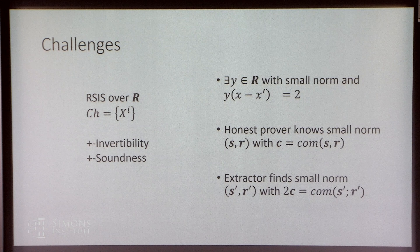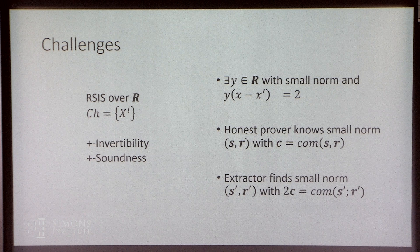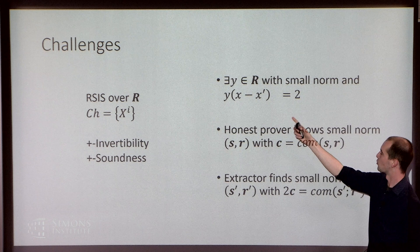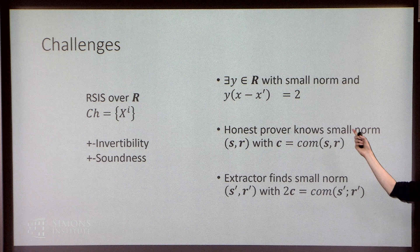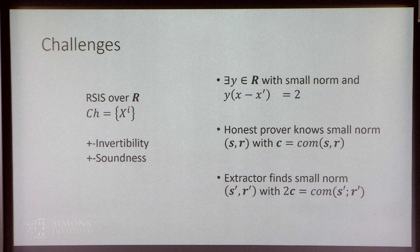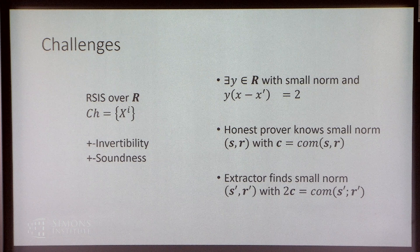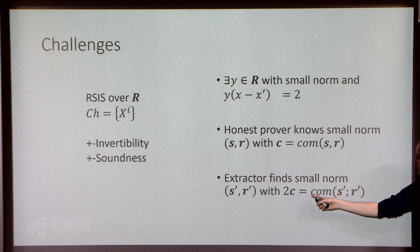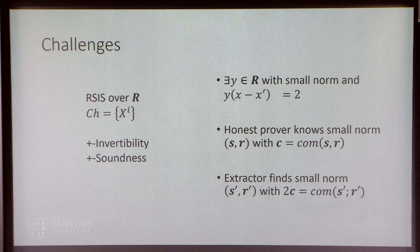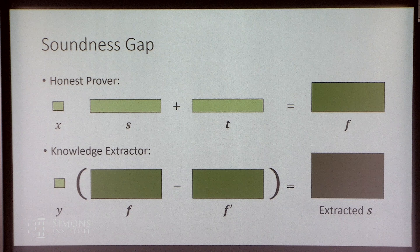What do I mean by 'almost' giving invertibility? We want an inverse to x minus x' with small norm. We don't have an exact inverse, but there's always some y such that when you multiply it by the difference between two challenges you get 2 instead of 1 — so y is almost a short inverse to x minus x'. What this means is: if the honest prover knows an opening to the commitment with small norm, the extractor can find a small-norm opening, but when you follow through the algebraic steps, you pick up a factor of 2 in front of commitment C. So the knowledge extractor actually finds an opening to a different commitment — 2C. This is a soundness gap.